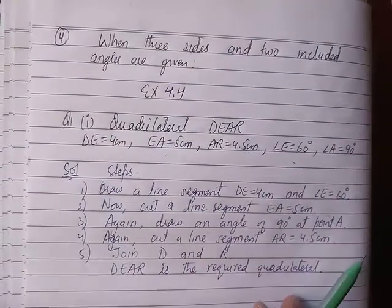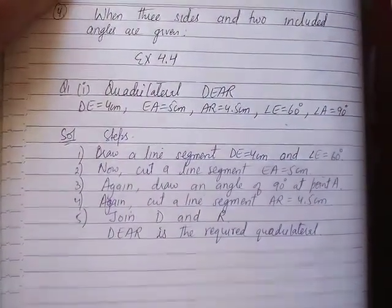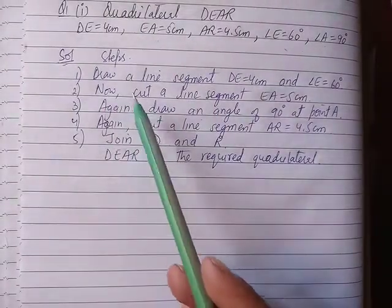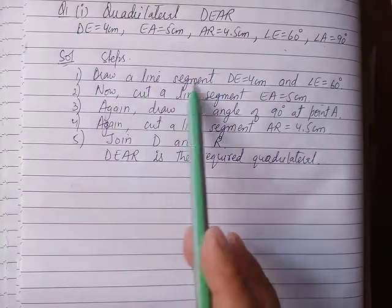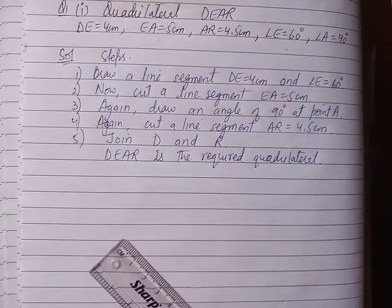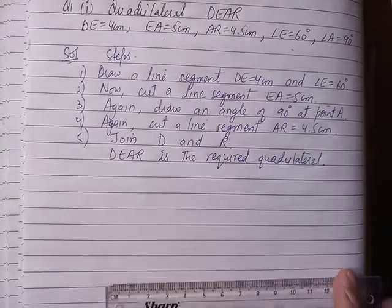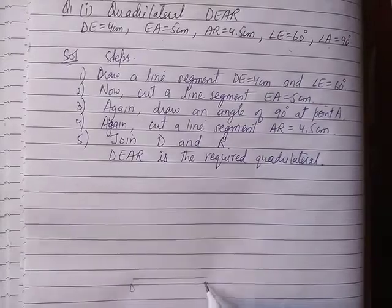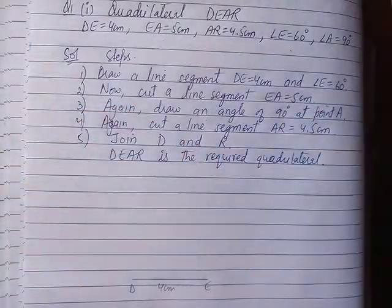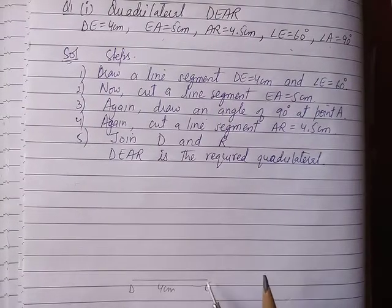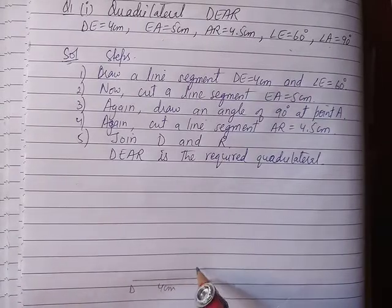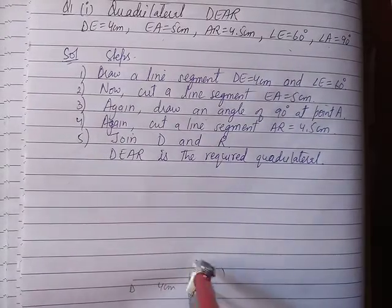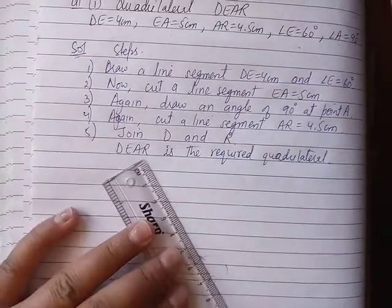The construction follows these steps: First, draw a line segment DE equal to 4cm. Next, draw an angle of 60 degrees at point E. The angle measures 60 degrees.